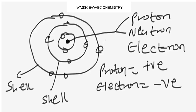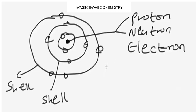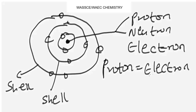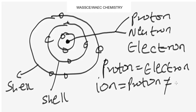Now let's look at the difference between a neutral atom and a charged atom, which is an ion. In a neutral atom, the number of protons equals the number of electrons. In a charged atom — that is, an ion — an ion is simply an atom that possesses an electric charge. In an ion, the number of protons is not equal to the number of electrons.